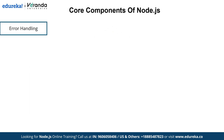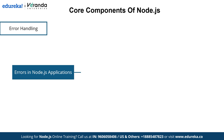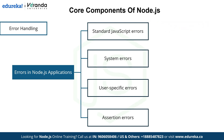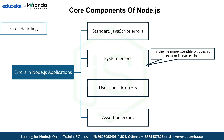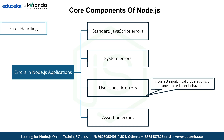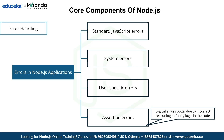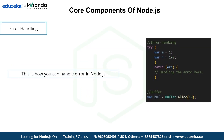The next component is error handling. Error handling in Node.js ensures your application runs smoothly by catching and managing unexpected issues. It uses mechanisms like try-catch blocks and event emitters to handle errors efficiently and maintain stability. Node.js errors can be grouped into four types: standard JavaScript errors such as syntax error, type error, and reference error; system errors which arise when resources like files are missing; user-specific errors from invalid inputs or unexpected user actions; and assertion errors resulting from logical mistakes or incorrect assumptions in the code.